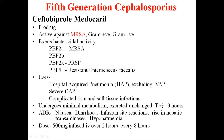Ceftobiprole also binds to PBP2B and PBP2X, which confers effectiveness against penicillin-resistant Streptococcus pneumoniae. It also binds to PBP5, making it effective against resistant Enterococcus faecalis. It can be used as monotherapy for hospital-acquired pneumonia (excluding ventilator-associated pneumonia) and is effective in severe community-acquired pneumonia and complicated skin and soft tissue infections. It undergoes minimal metabolism, has a half-life of 3 hours, and adverse effects include infusion site reactions and rise in hepatic transaminases.